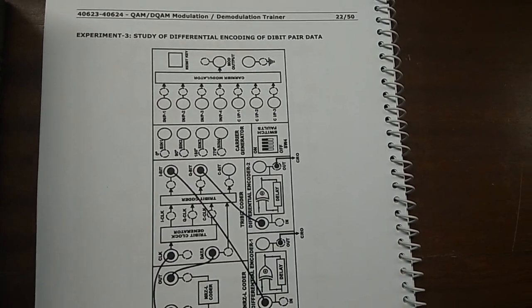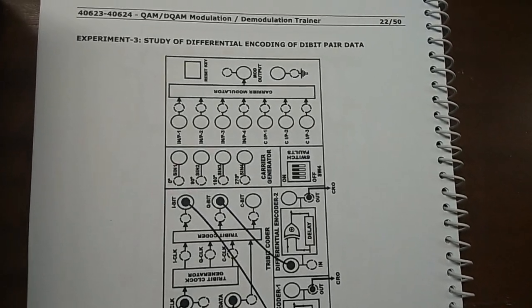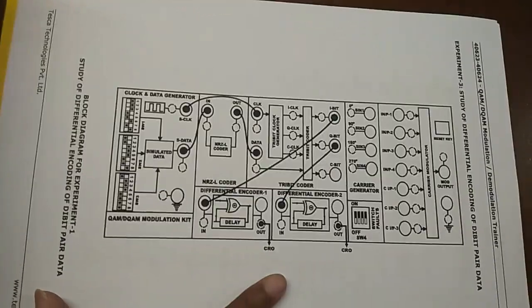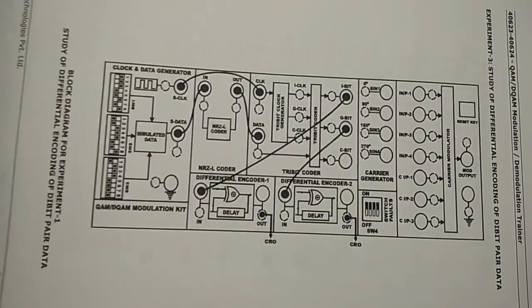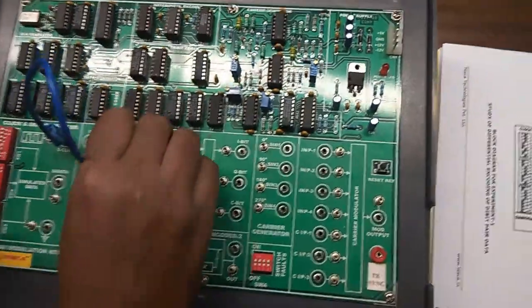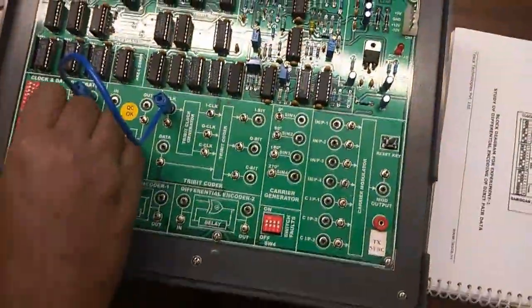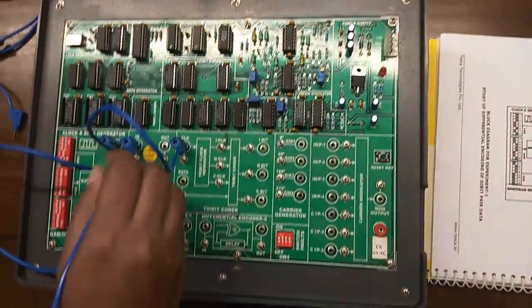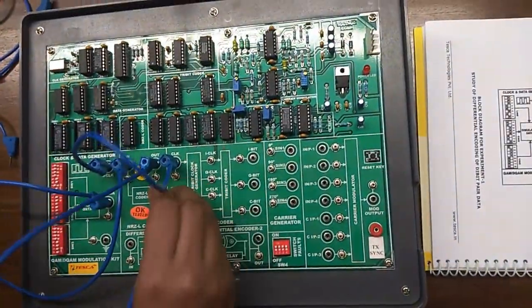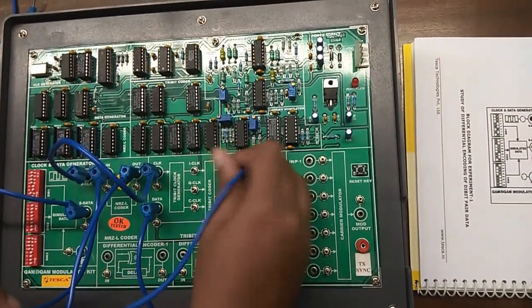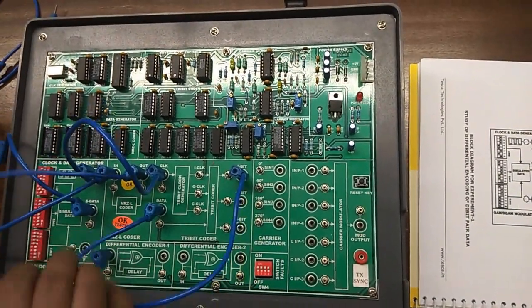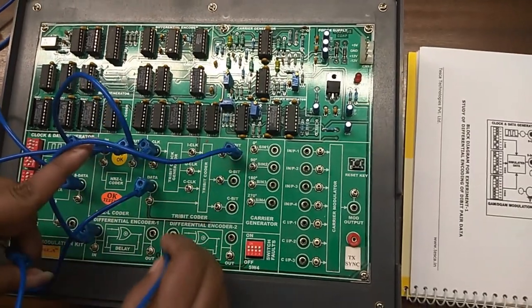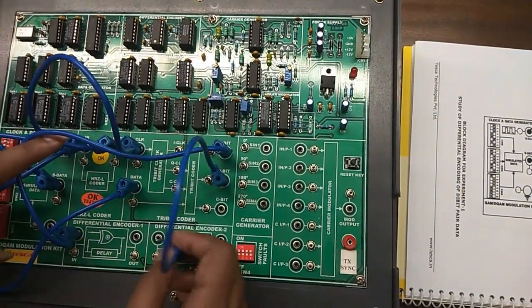Our next experiment is the study of differential encoding of DI-bit paired data. This is the connection that we are going to build. Connect S clock to clock, connect S data to input, connect output to the data port. Connect I bit to differential encoder 1 input and connect Q bit to differential encoder 2 input data.